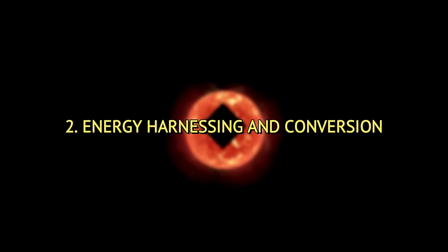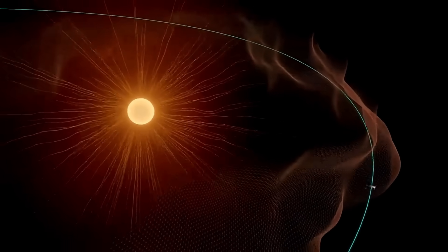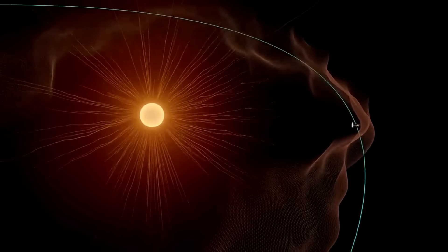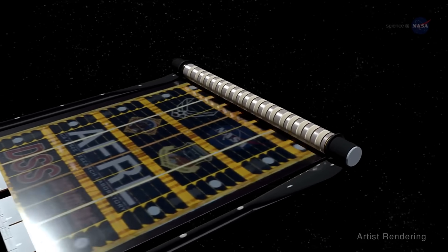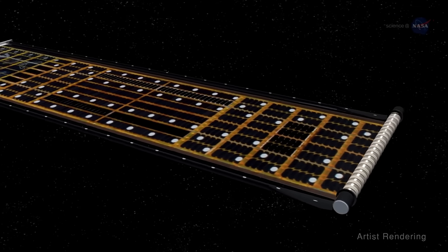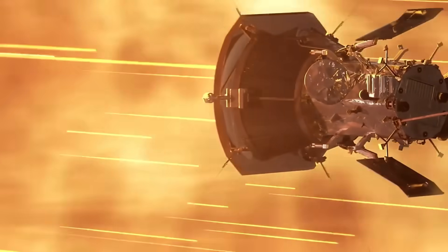Second, Energy Harnessing and Conversion. The Statite must convert solar energy into electricity using high-temperature thermionic converters. Similar systems are being researched for space-based solar power projects, like NASA's experiments with photovoltaic arrays designed for extreme conditions. The Parker Solar Probe's solar arrays provide a closer analog for operating near the sun.